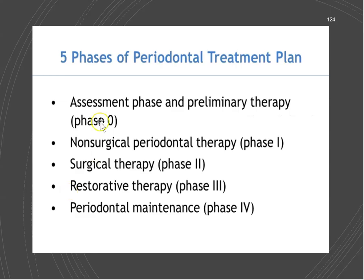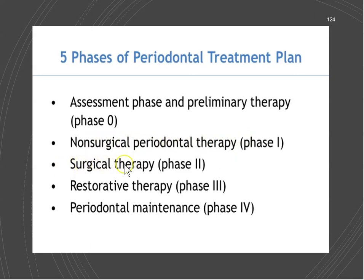In non-surgical phase one therapy, we can do almost everything: educate, dietary counseling, tobacco cessation, fluoride, sealants, debridement, polishing, and evaluation. Evaluation includes a four-to-six week re-evaluation where we reassess inflammation, pocket depths, and oral self-care knowledge. As an FYI, any periodontal client with periodontitis should be seen every three to four months. Clients who are healthy or have gingivitis should be seen every six months.